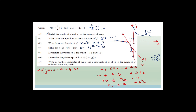Determine the y-intercept of k if k(x) = 2·g(x). So k(x) = 2(−2x − 4) = −4x − 8. The y-intercept is when x = 0, so y = −8. The y-intercept of k is (0, −8).